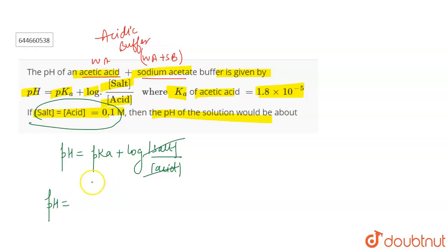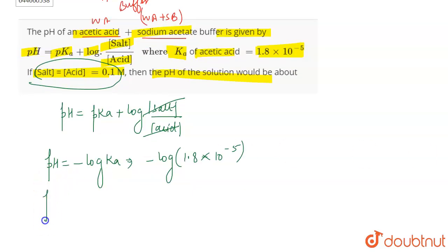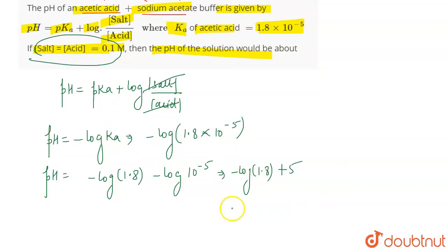So pH will be equal to pKa, and pKa is actually minus log of Ka, which is equal to minus log of 1.8 into 10 to the power minus 5. This will become pH equals minus log of 1.8 minus log of 10 to the power minus 5. So this will become minus log of 1.8 minus of minus 5 log 10. Log 10 is 1 and minus of minus 5 means plus 5.